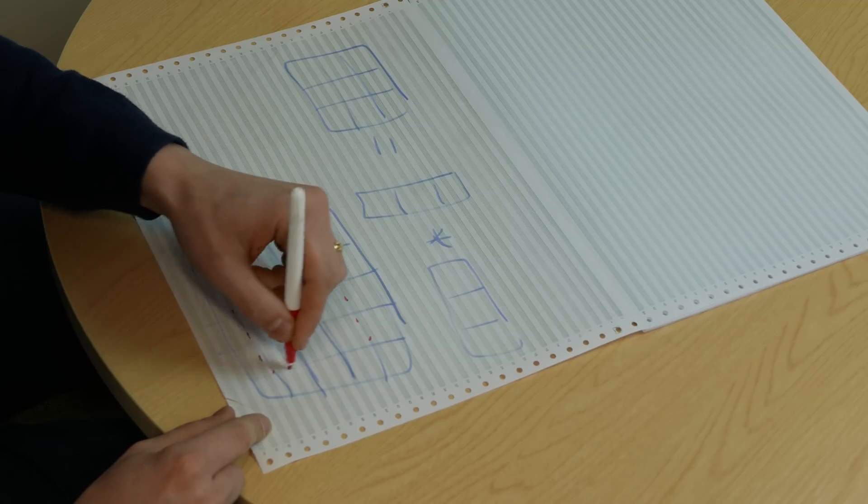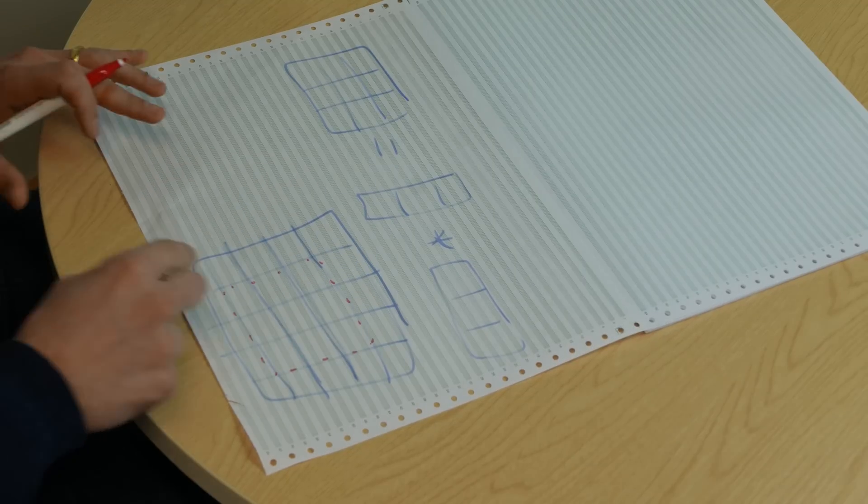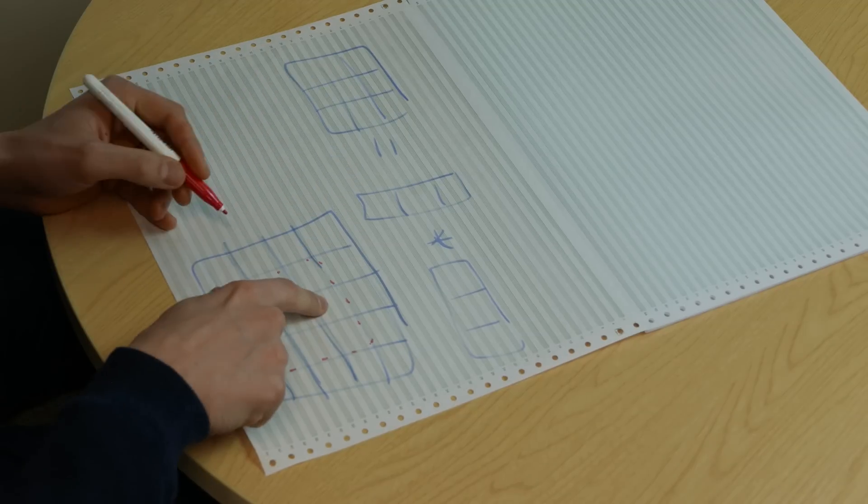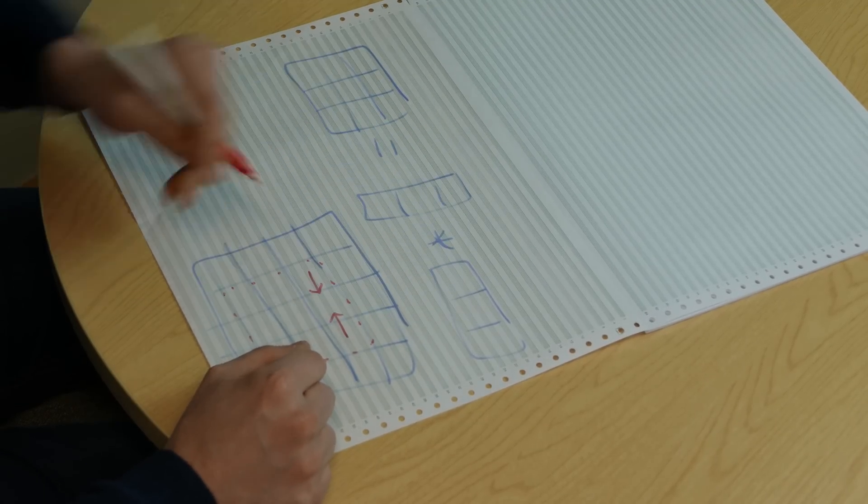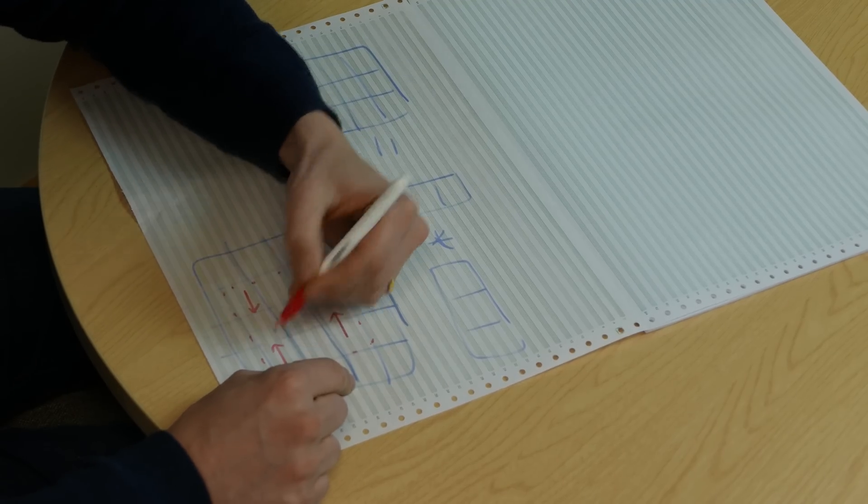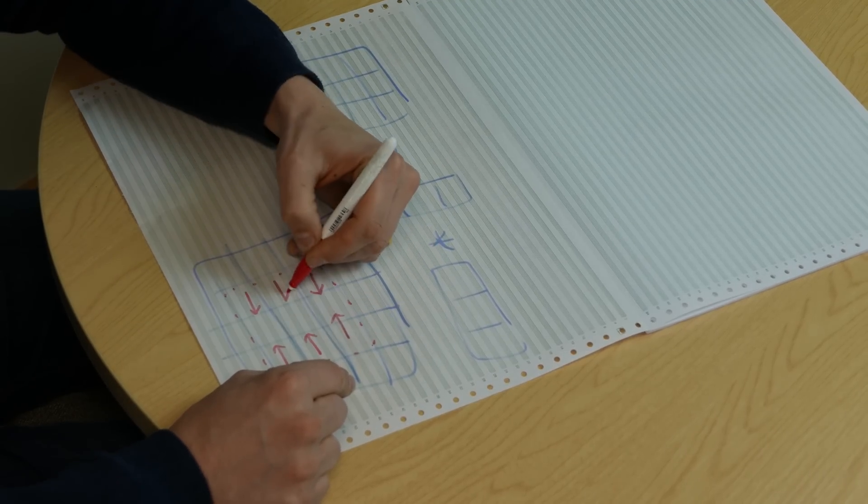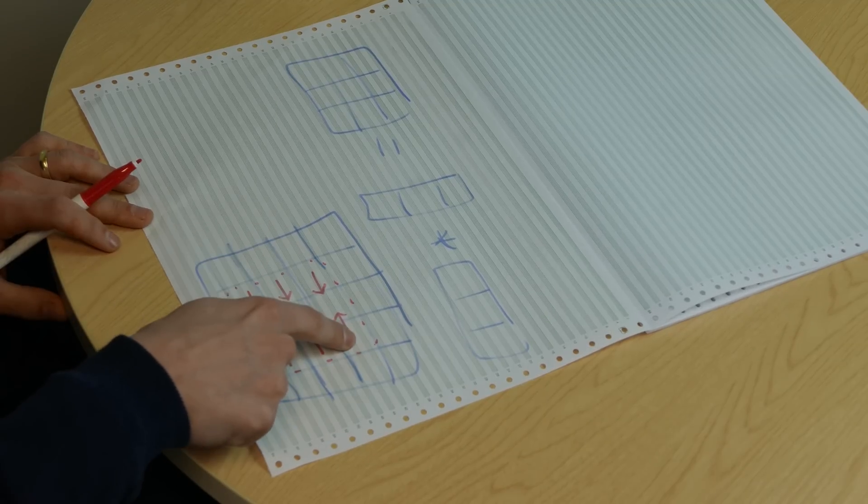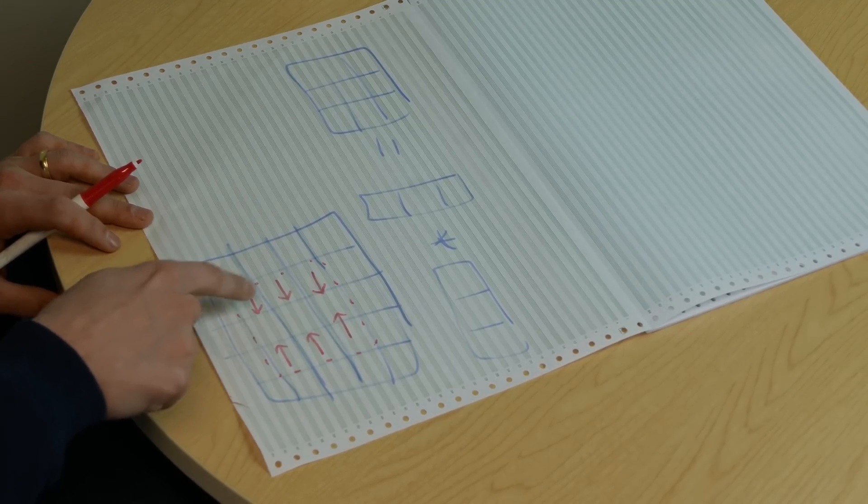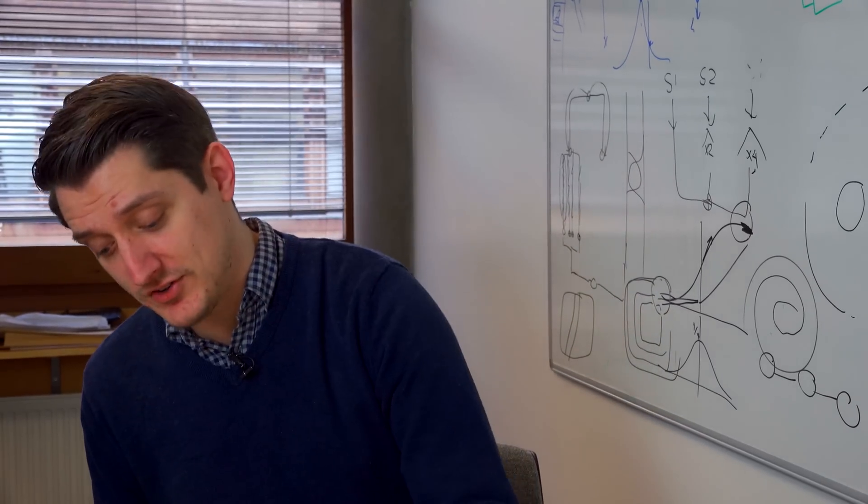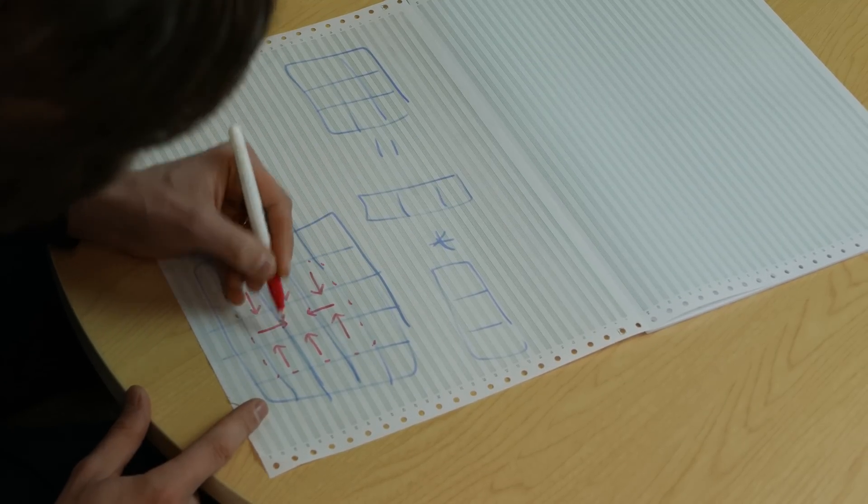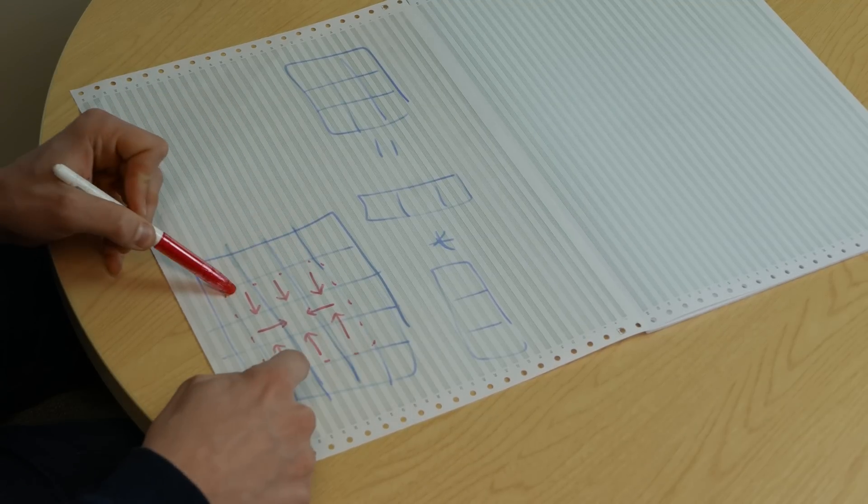What we would normally do is put our 3 by 3 kernel over here and do this sum product, but what we're going to do first is the horizontal pass. This pixel here is going to include this one and this one - they call it gathering. This one is going to be calculated using these three pixels, this one using these three pixels, and so on. Then when we finally do our vertical pass here, we're actually bringing this pixel in.